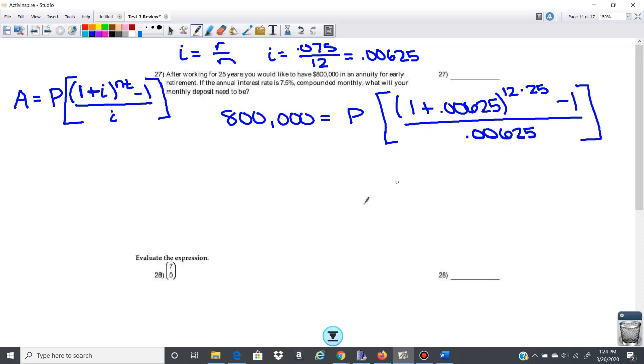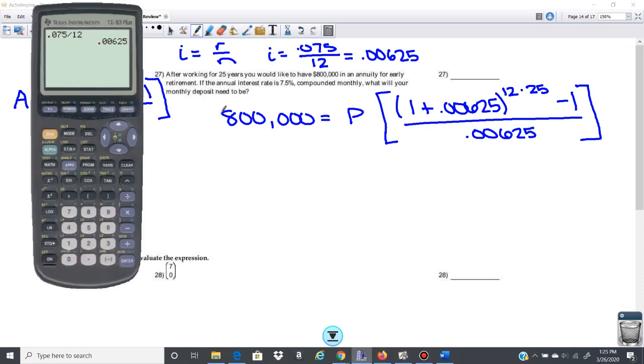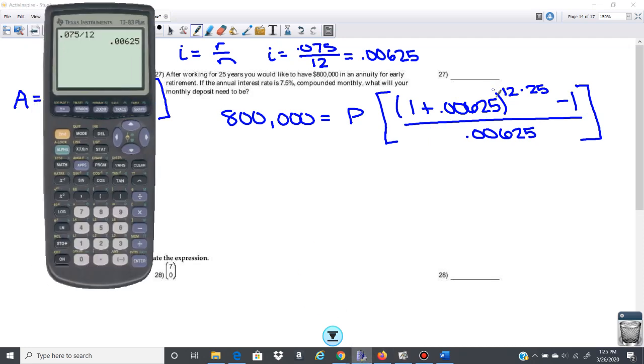So biggest thing here, we want to pay attention to order of operations, so just watch how I do this here. So first thing that I'm going to do, well, what's 12 times 25? That is 300. The first thing I'm going to do is I'm going to do 1 plus 0.00625. Then I'm going to raise it to the 12 times 25, so I'm going to raise it to 300.